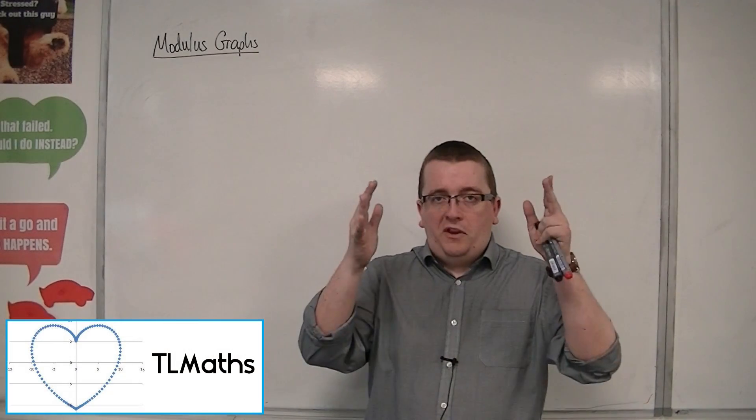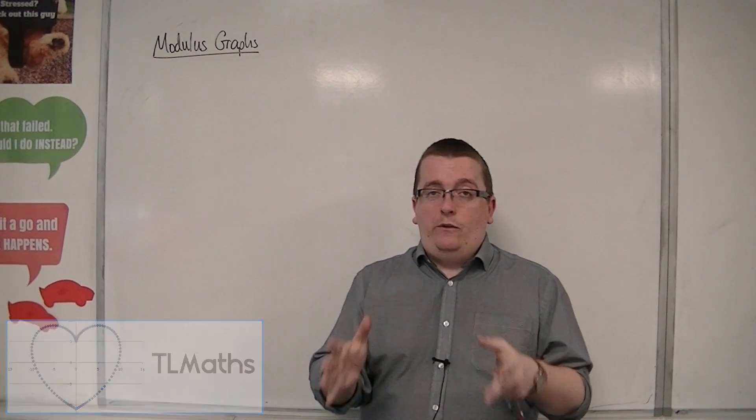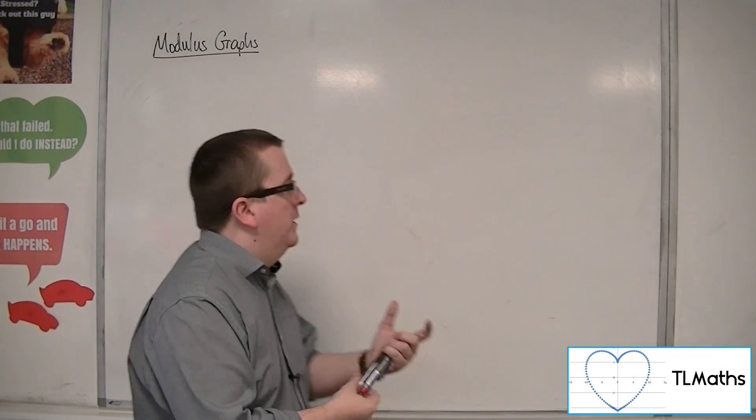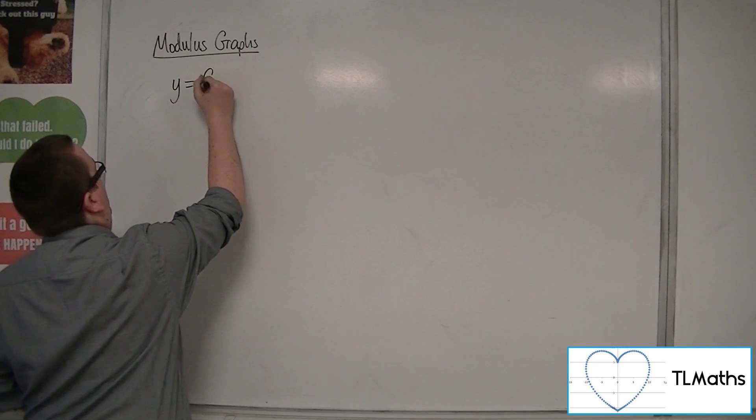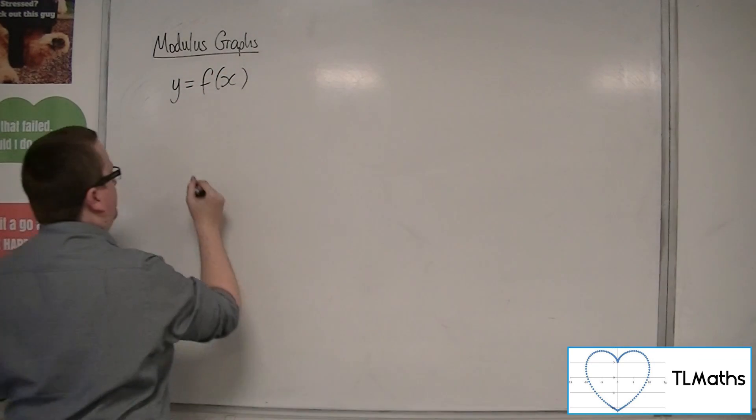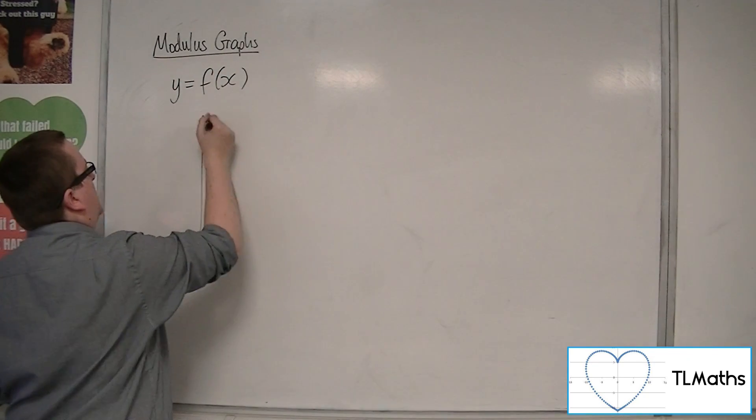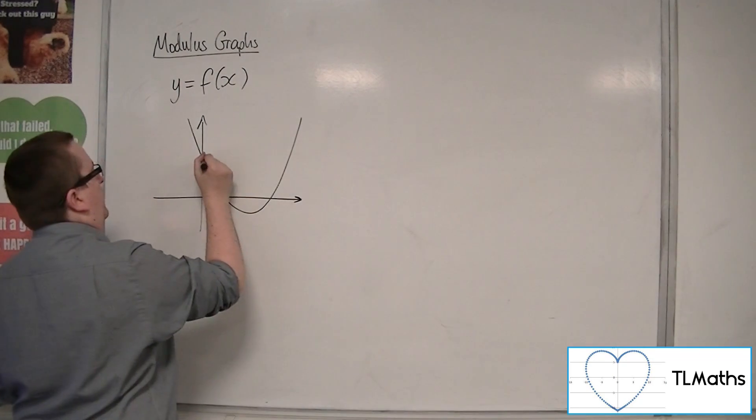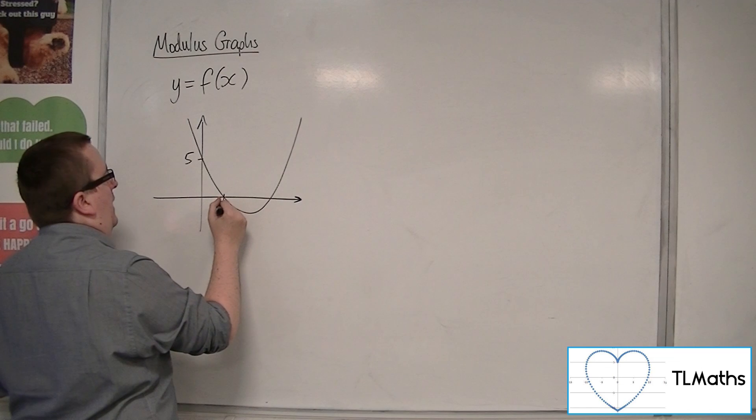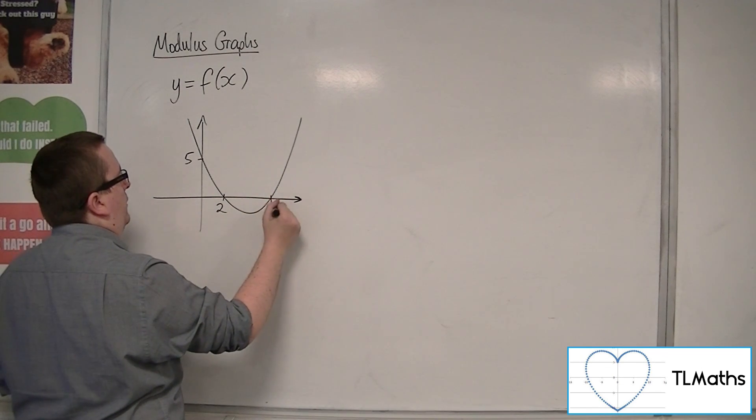We know what happens when we stick modular signs around the outside of a whole function. If I had y equals f of x, and it looked something like this, let's say it looks something like this. That's 5, that's 2, that's 3.